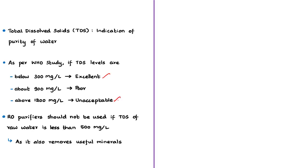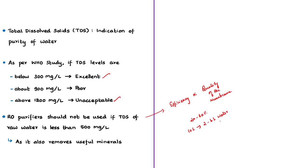Now let us see the present ruling given by the National Green Tribunal. This ruling is based on a plea by one NGO, which sought the conservation of potable water by preventing its wastage on account of unnecessary use of reverse osmosis systems. We need to understand why there is wastage of water in RO systems. Based on an expert committee constituted by the NGT, the efficiency of RO systems depends on the quality of the membrane, and most RO systems have an efficiency ranging between 20 to 60 percent.